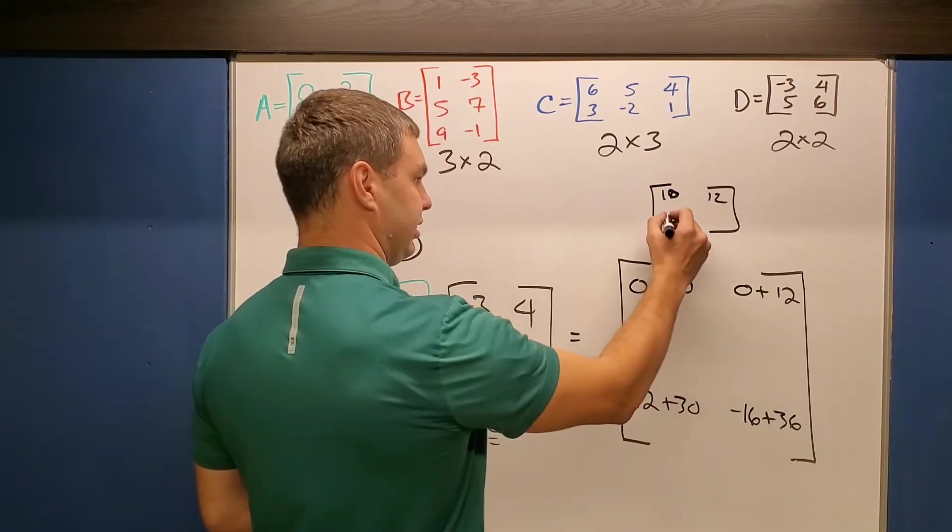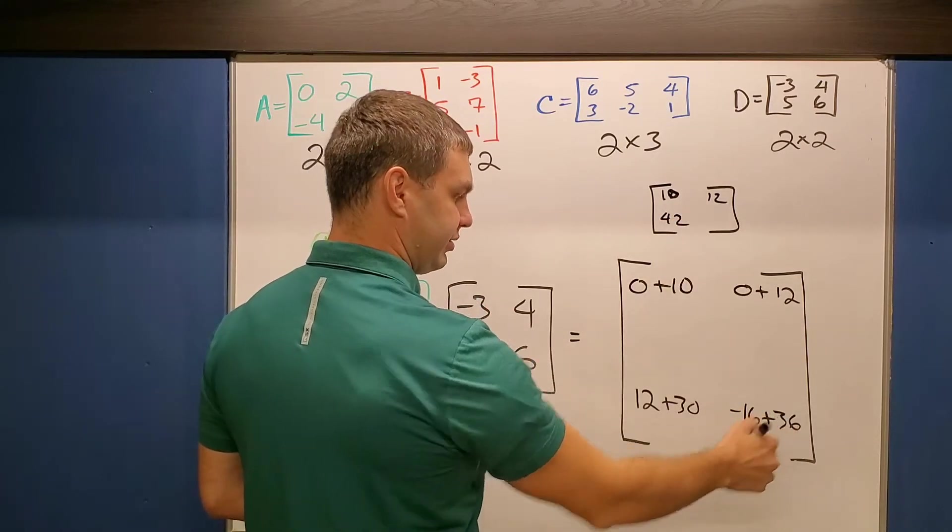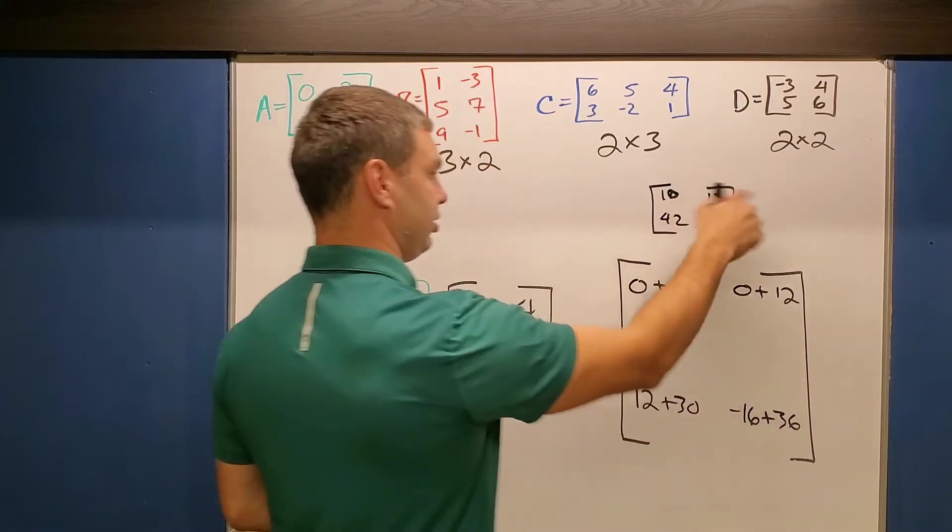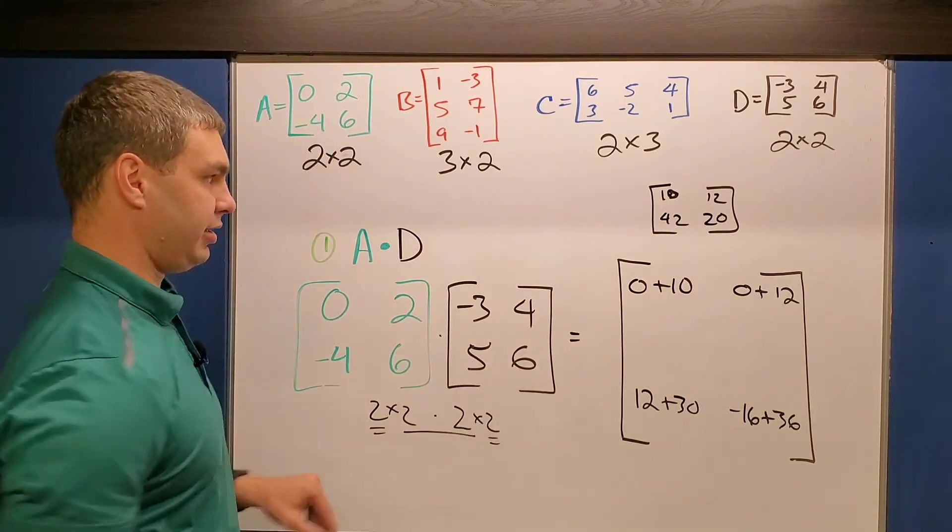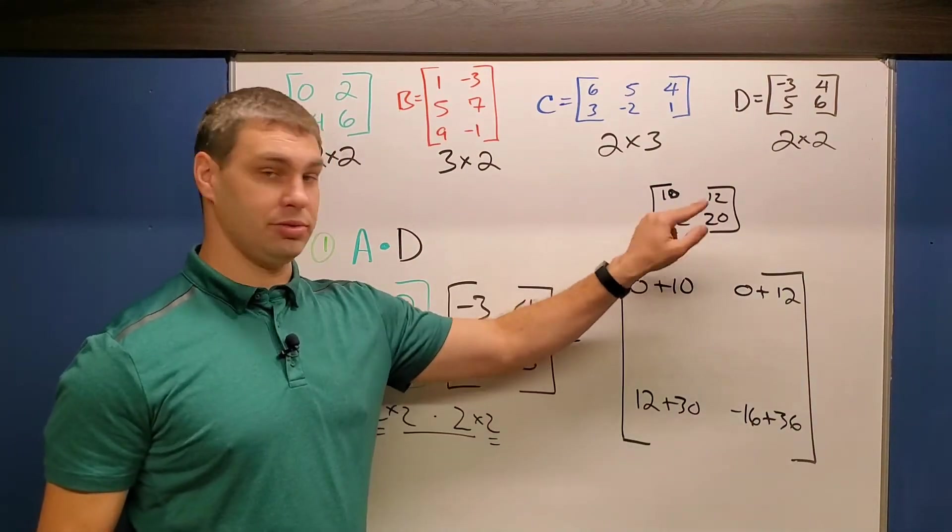12 plus 30 is 42. And lastly, -16 plus 36 is 20. So my final answer when I multiply these two together is 10, 12, 42, 20.